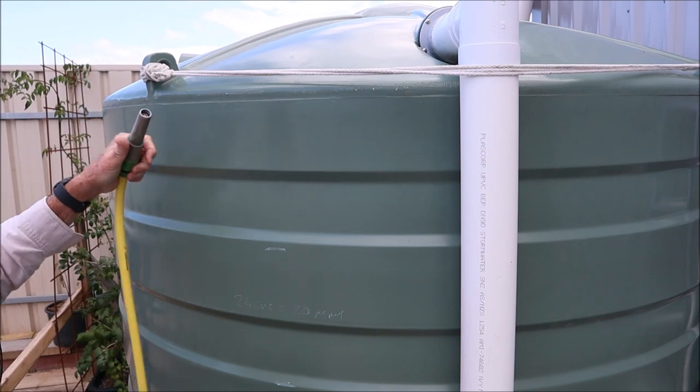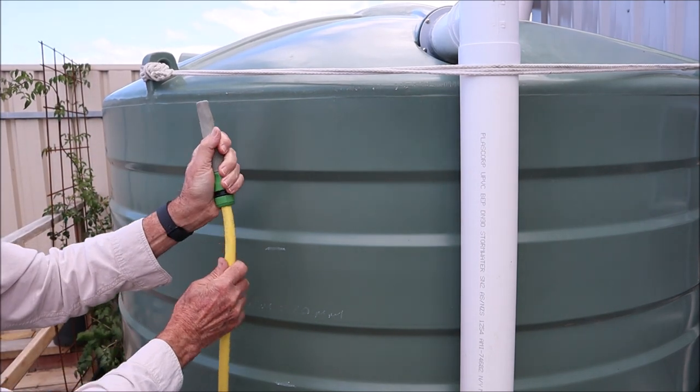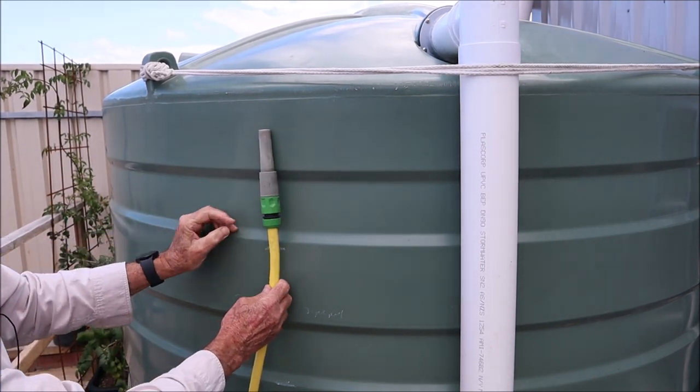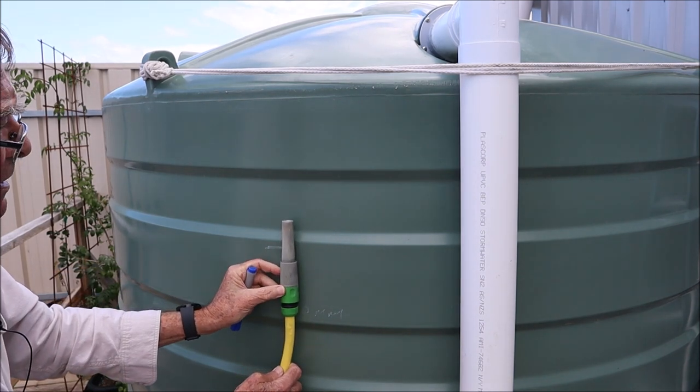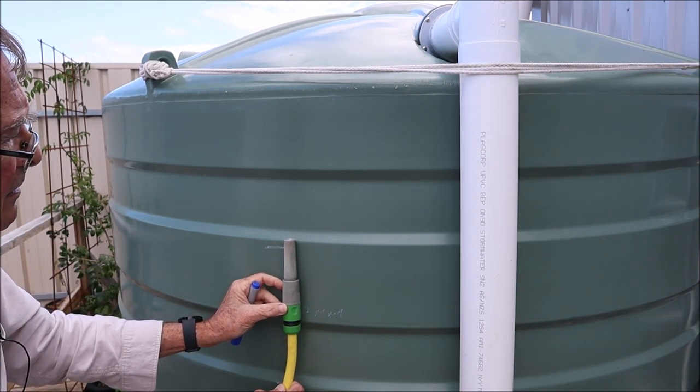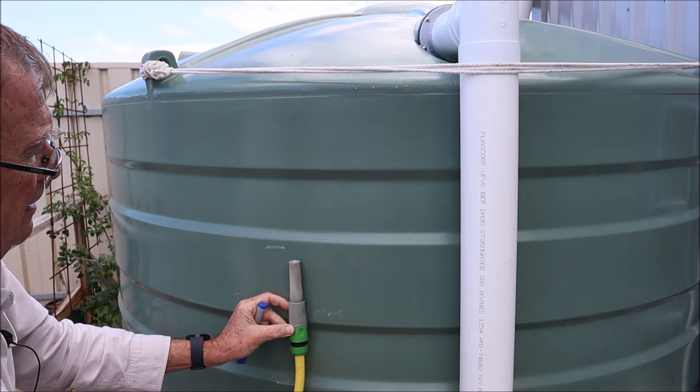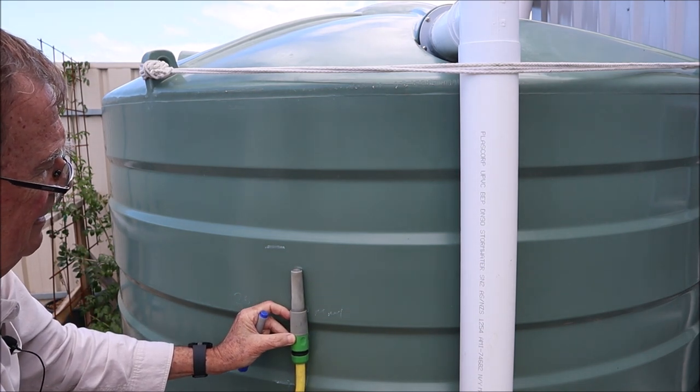You just keep it vertical, run it down until you see water coming out the end, and that'll give you the level of the water level. I'll go down quite fast, there it's coming out now.